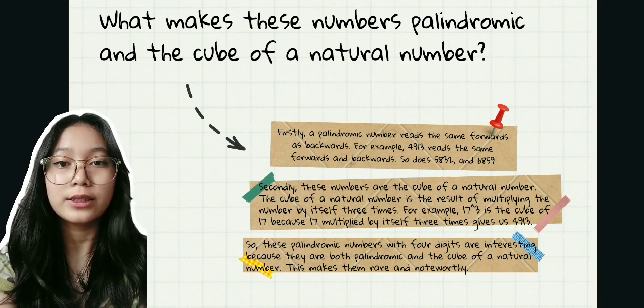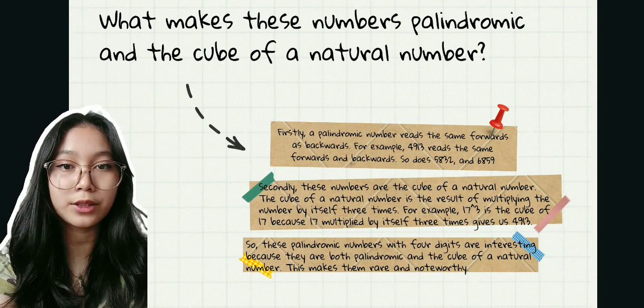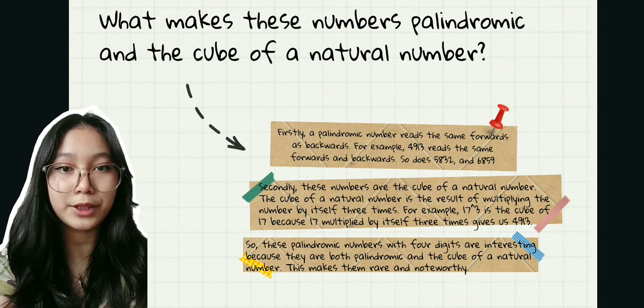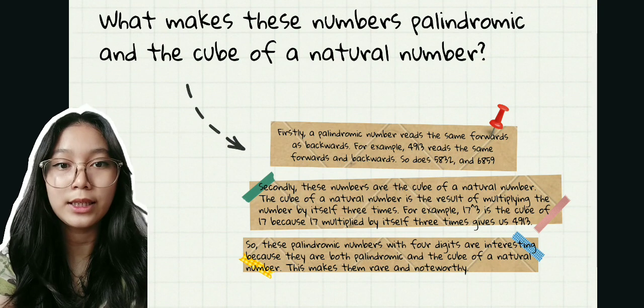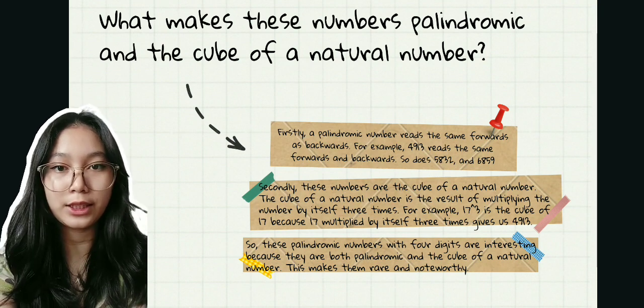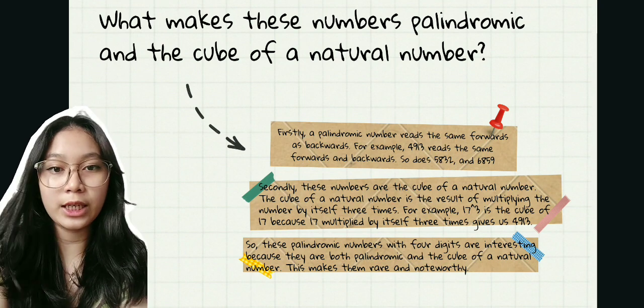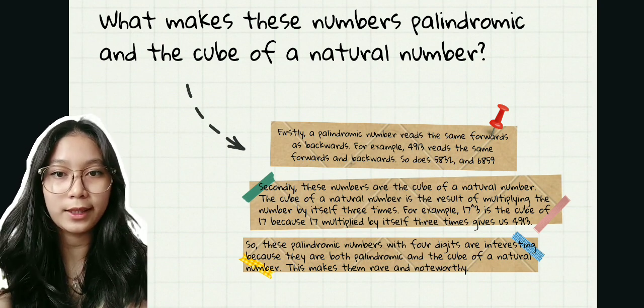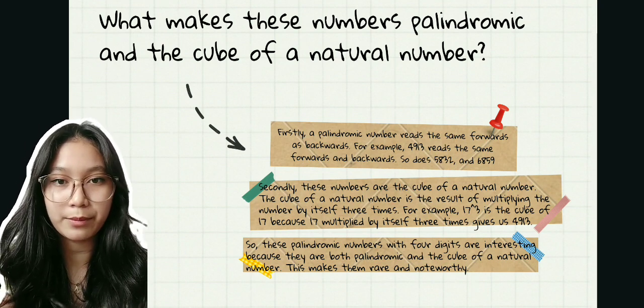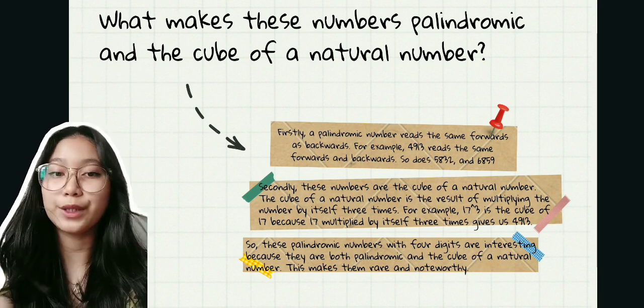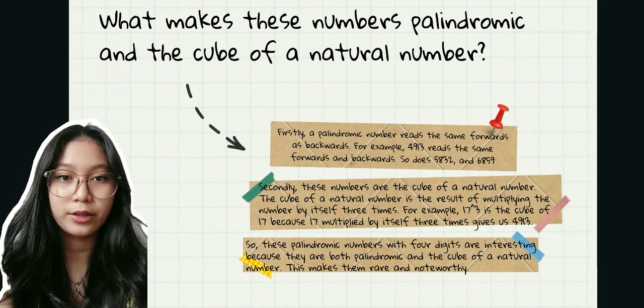Secondly, these numbers are the cube of a natural number. The cube of a natural number is the result of multiplying the number by itself three times. For example, 17 raised to 3 is the cube of 17 because 17 multiplied by itself three times gives us 4,930.